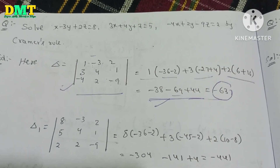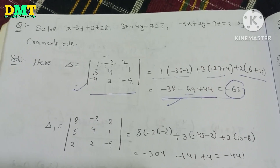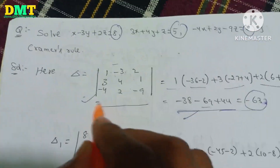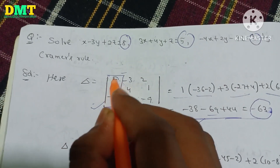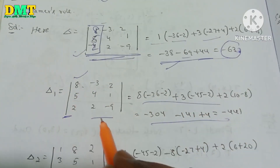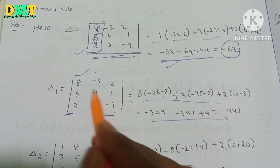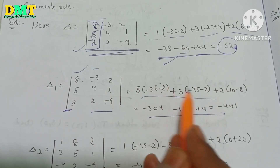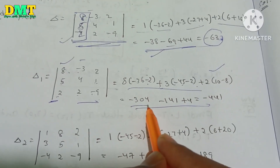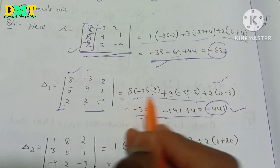We found out the determinant value. In Cramer's Rule, this is called delta. Delta 1 by delta. Delta 1 value: 8 into 9 is 436, minus 2 times 1 is 2, plus minus, already plus 3 times 5 is 45, minus 2 times 1 is 2, plus 2 into 5 is 10, minus 8. Delta value is minus 304, minus 141, minus 4 equals minus 441.